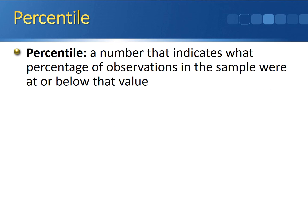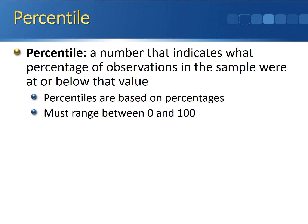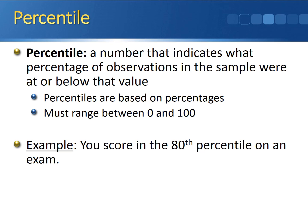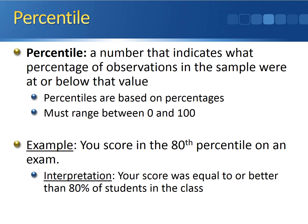A percentile is a number that indicates what percentage of observations in a sample are at or below that particular value. Percentiles are based off of percentages, which means they have to range between 0 and 100. For example, your professor tells you that you scored in the 80th percentile on an exam. What this literally means is that your score was equal to or better than 80% of all other students in the class — 20% of the class did better than you, and you did better than 80% of the class.